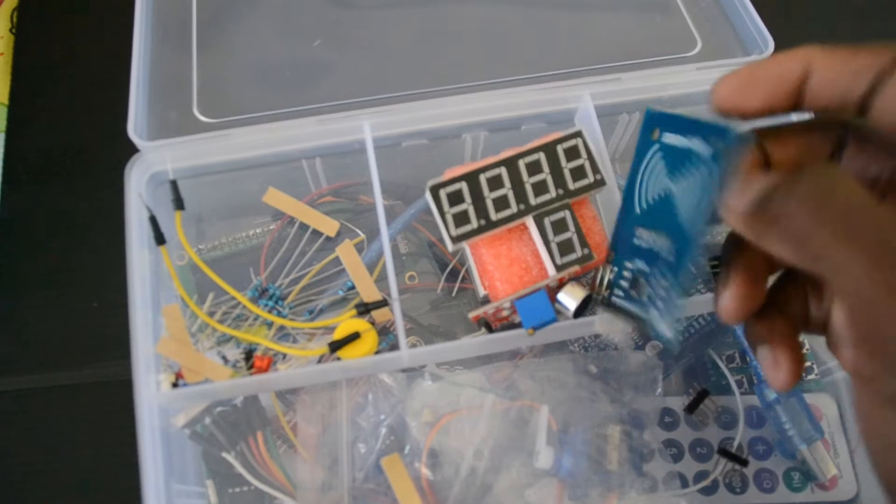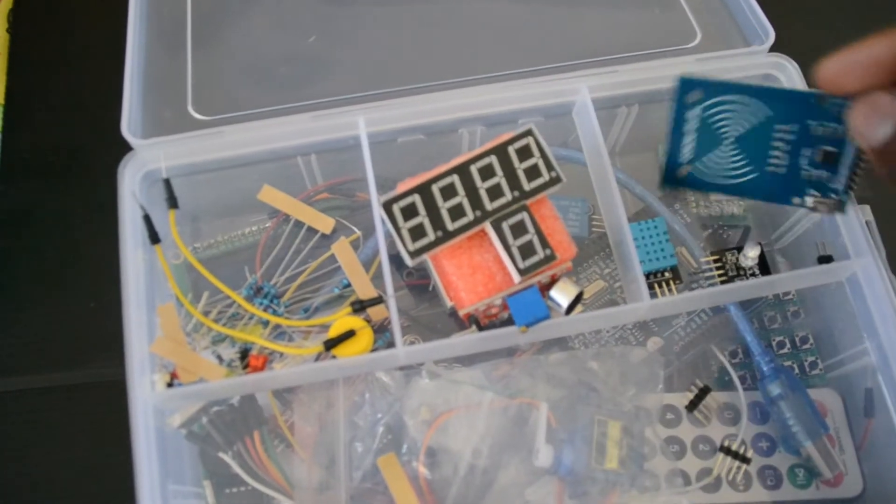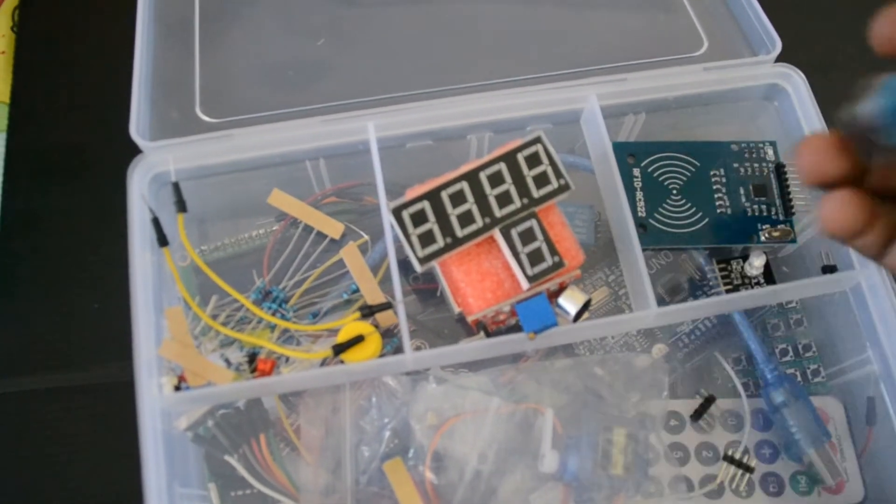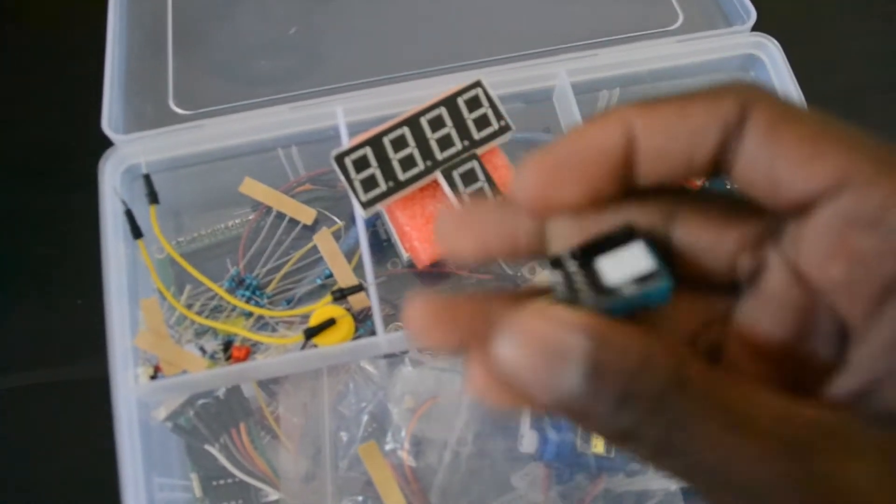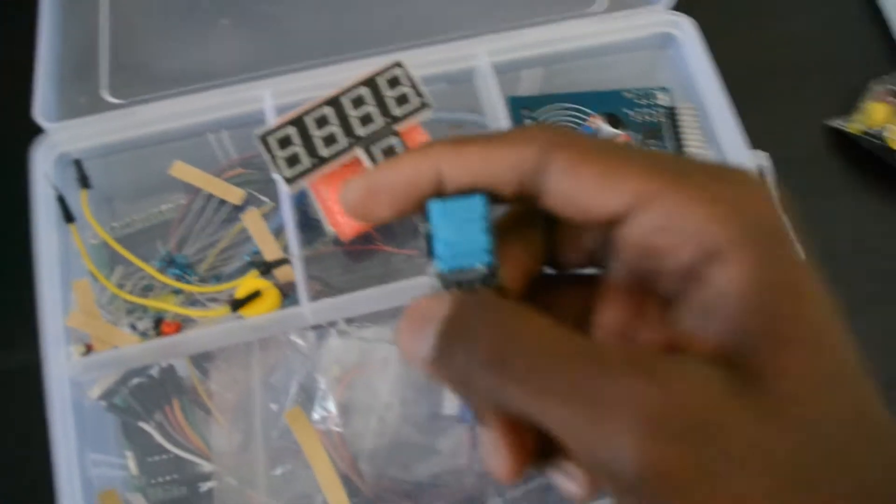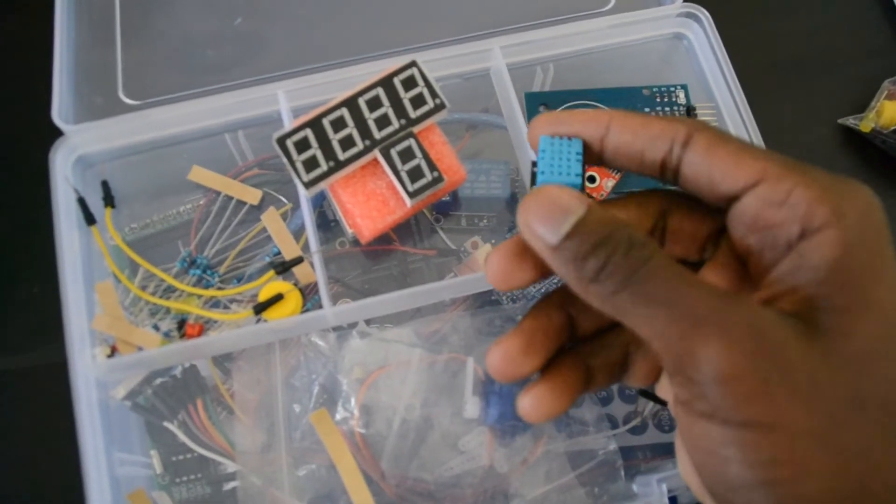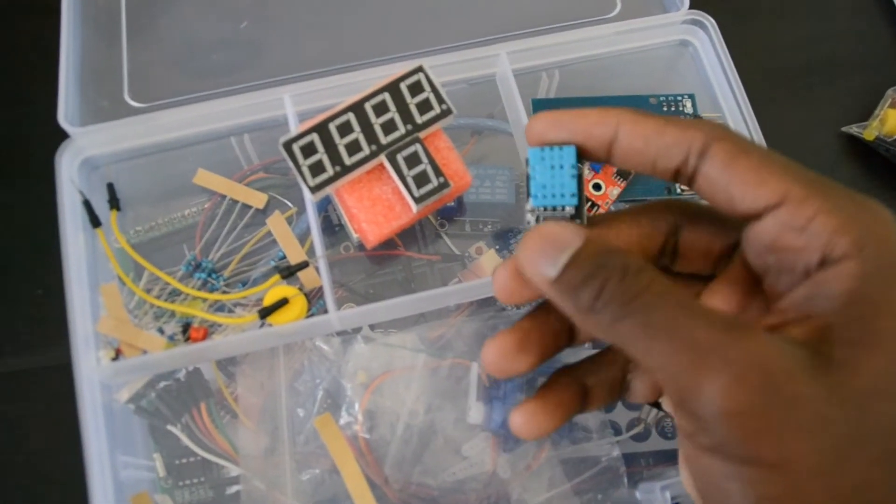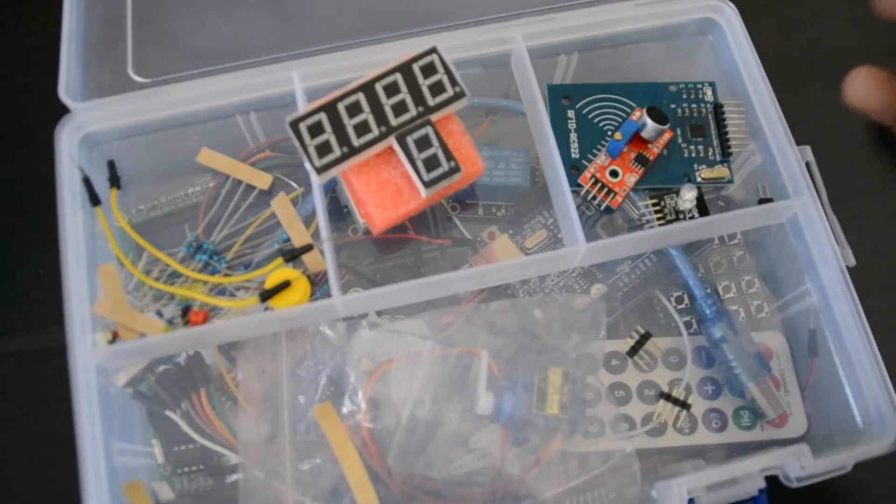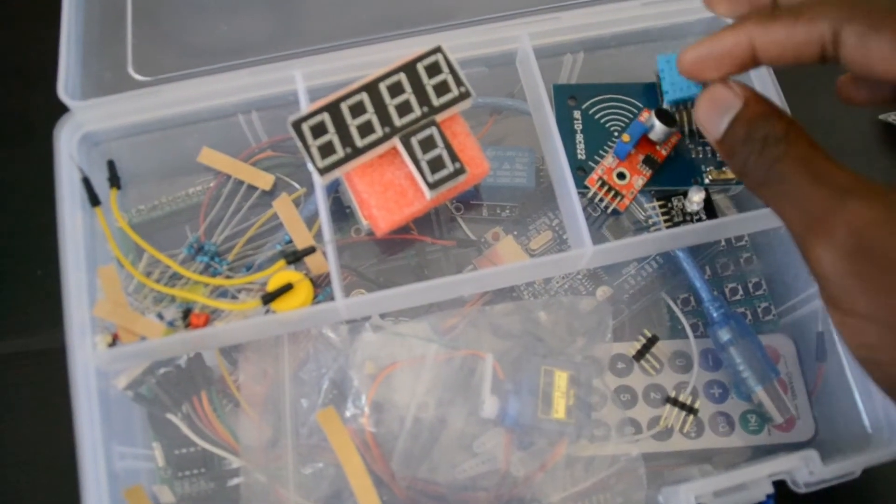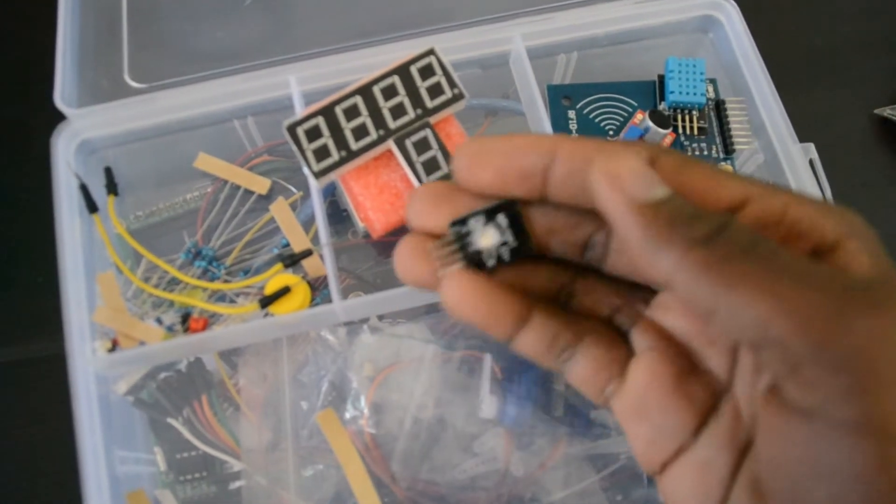This RFID sensor, RFID reader. This is the DHT 11, a humidity and temperature sensor. It works as well. This is the RGB LED module board.